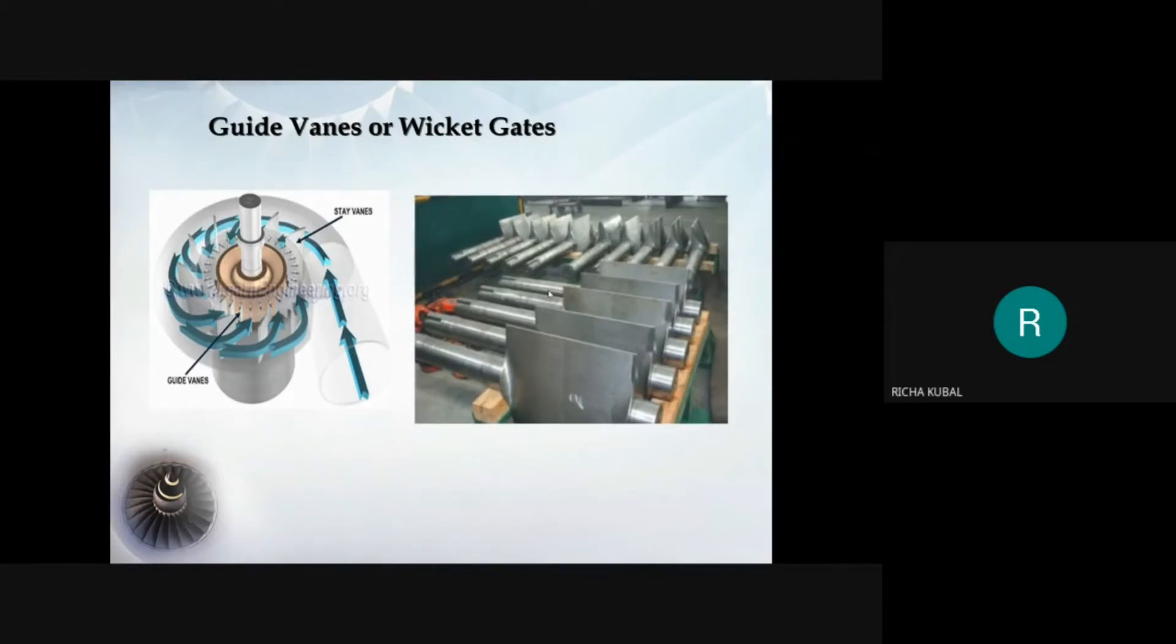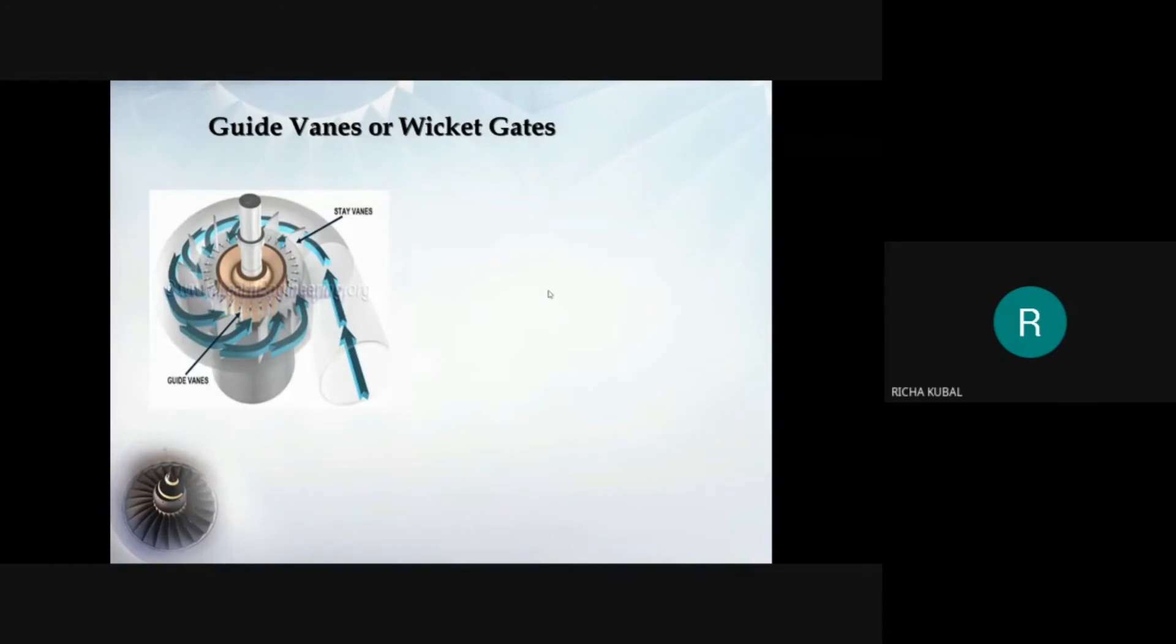Guide vanes also regulate the discharge according to the load acting on the turbine. It can be done by swinging the guide vanes about their own pivot by opening or closing the guide vanes passage. Swinging action of guide vanes are obtained by regulating rod connected to regulating shaft and is operated by servo motor governing mechanism. Materials used to manufacture wicket gates are structural steel and stainless steel.